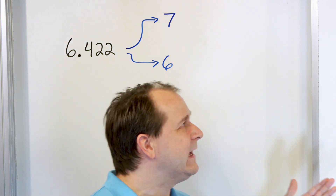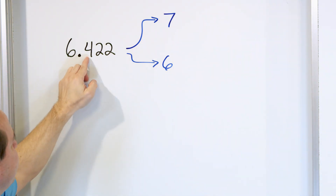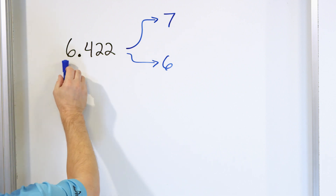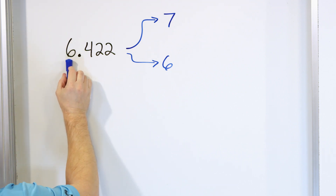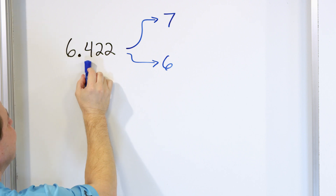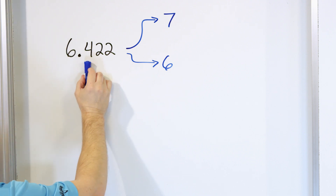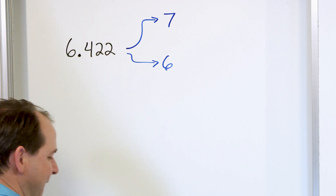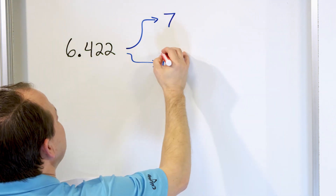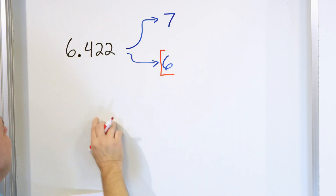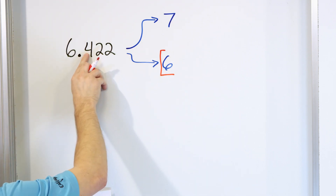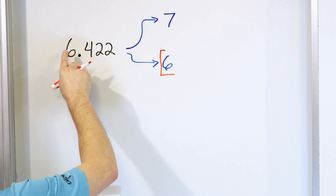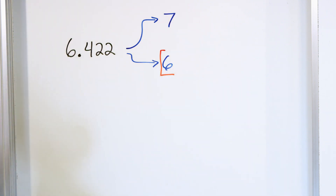Since 6.422 gives us 0.422, we're going to be rounding down. Look next door at the digit in the tenths place — it's a 4. Since 4 is less than 5, we round down. The answer is 6. If that digit were 5, 6, 7, 8, or 9, we would round up and our answer would be 7.